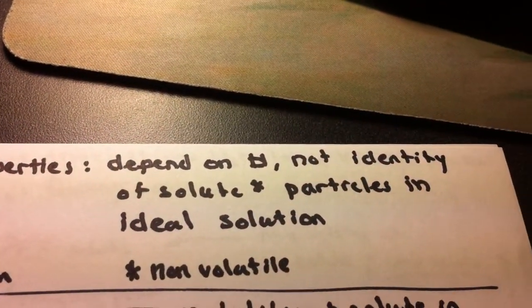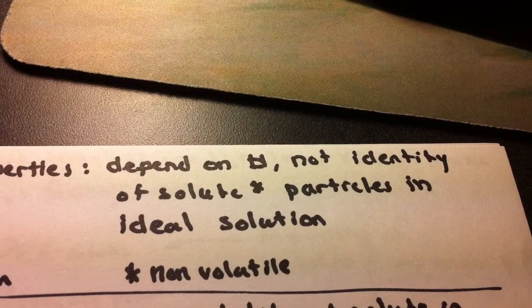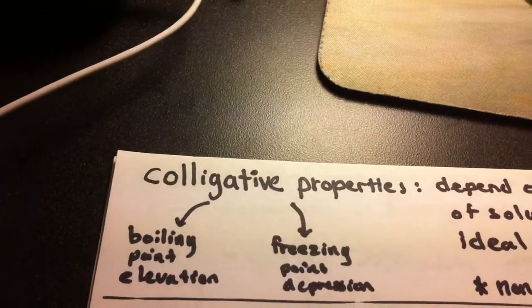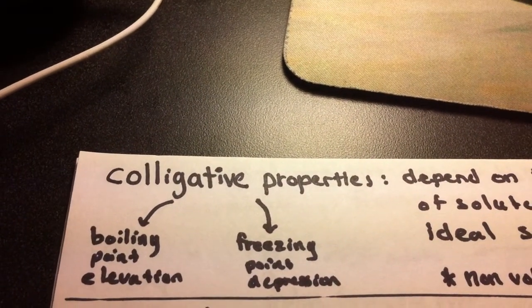Colligative properties depend on the number, not identity of solute particles in an ideal solution. Examples would include boiling point elevation and freezing point depression.